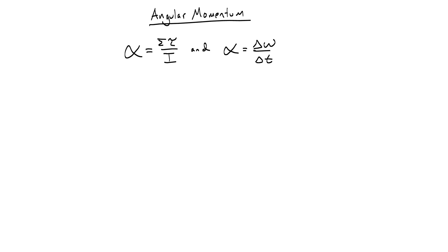In this video we're going to talk about angular momentum, and we're going to start by taking a look at alpha in two of its forms that we know. Angular acceleration alpha can either be the net torque divided by the moment of inertia, or it can be the change in angular velocity over the change in time. We're going to set these two equations equal to each other. So net tau over I equals delta omega over delta T. Then I'm going to multiply both sides by I and by delta T, so that I get sigma tau times delta T equals I times delta omega.